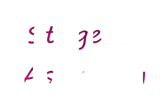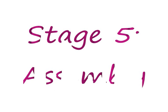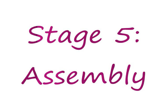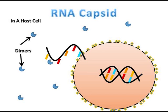Stage 5: Assembly. The assembly of the viral capsid is rather complex. The following steps in assembly are assumptions made by microbiologists. In the assembly of an RNA icosahedral capsid, the first step is the nucleation reaction.